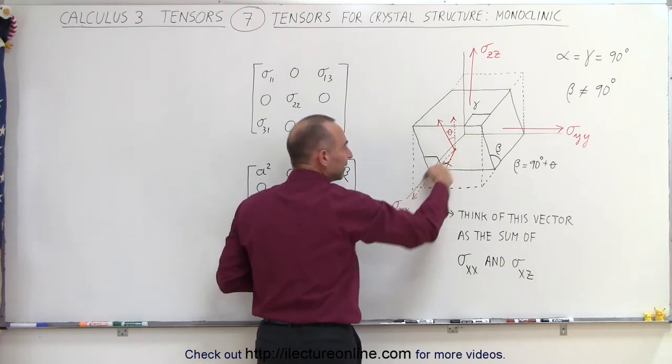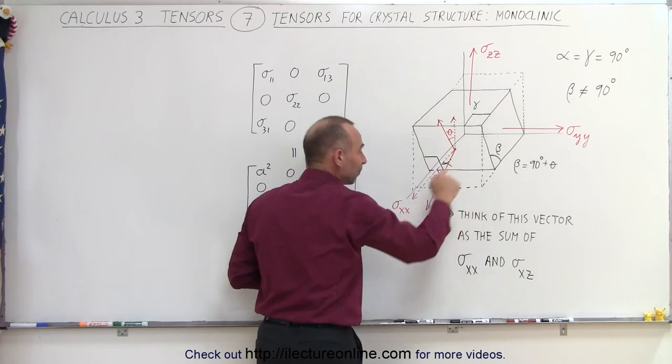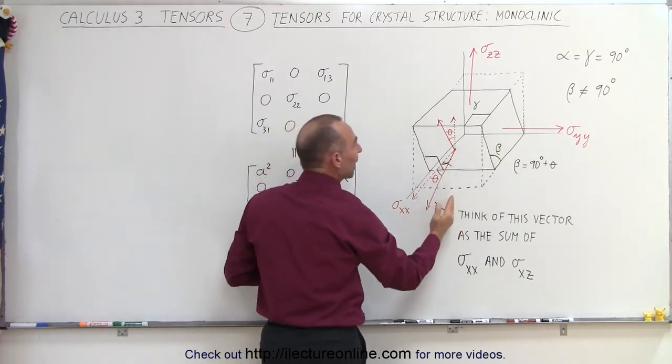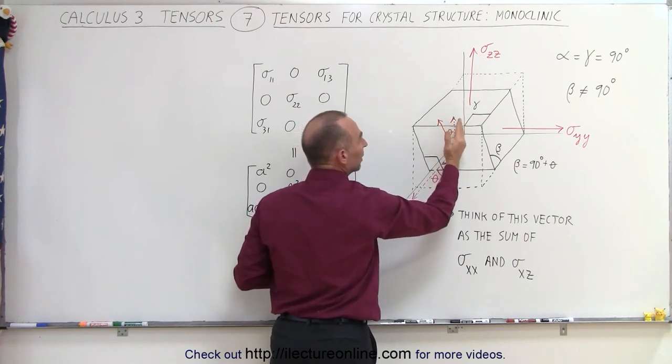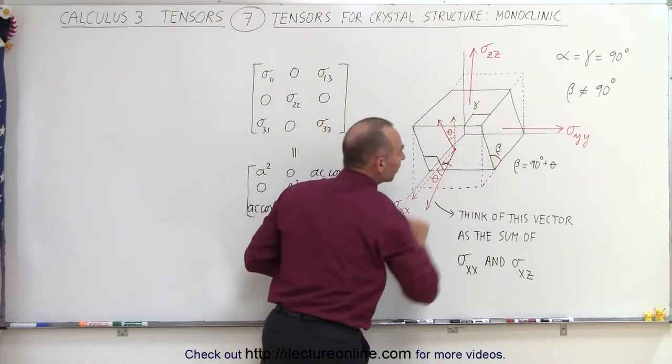Now we still have the perpendicular to the yz plane, which would be sigma xx, and then we have the component that goes straight into the z direction, which would be parallel to the yz plane as well.